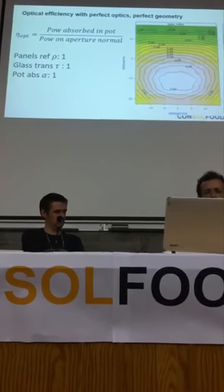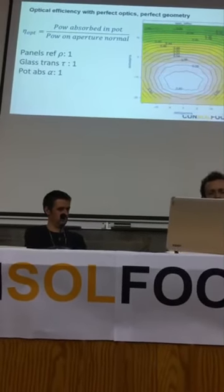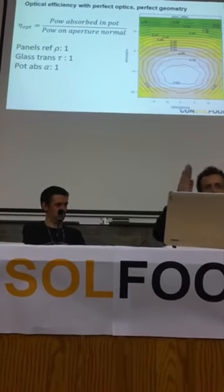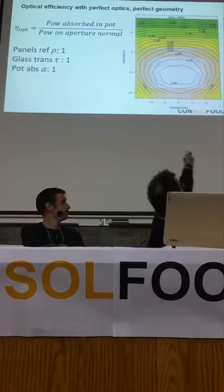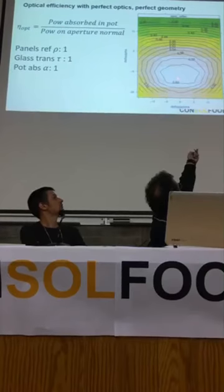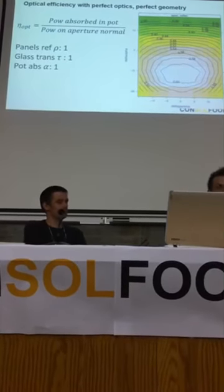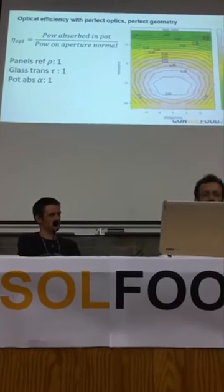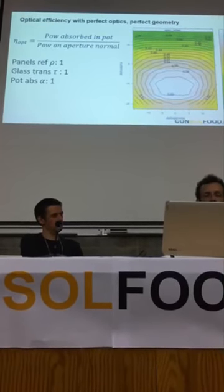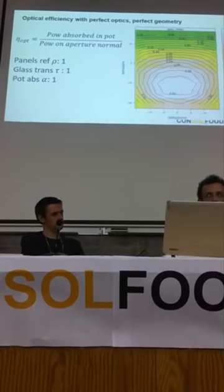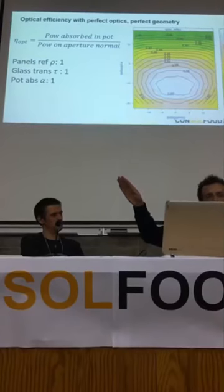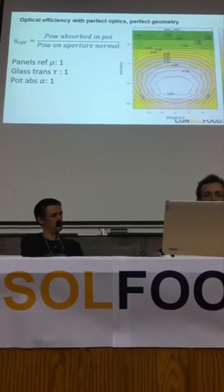The first important thing you can see is that there is a peak, but the peak is not at 40 degrees elevation. The peak is around minus 10 degrees. So it seems that the optical efficiency is better if the sun is a little bit lower than the natural bisector angle of the cooker.